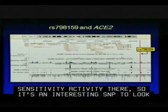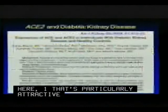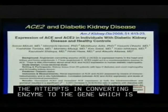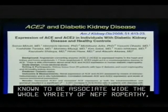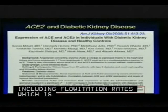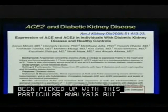There are lots of genes in this area, but upstream there's one that's a particularly attractive biologic candidate: the angiotensin-converting enzyme 2 gene, which is known to be associated with a variety of nephropathy-related traits, including estimated glomerular filtration rate, which is the definition of nephropathy. That's not saying this is necessarily a causal association, but it does raise questions as to why exclude the X outright. There may be some interesting stuff there.